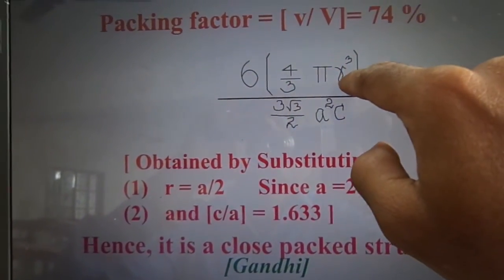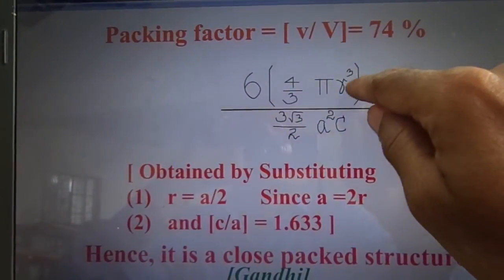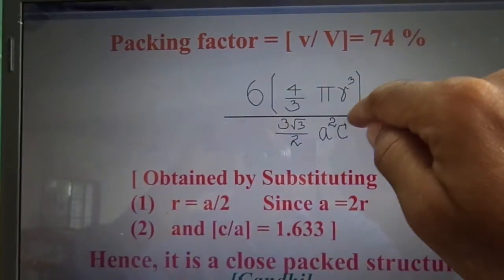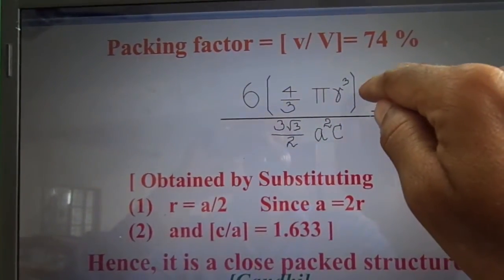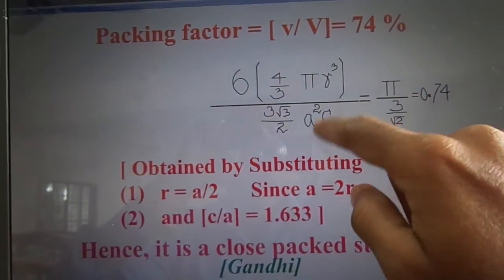Here the substitution that we can do is 2r is equal to a. So r is equal to a by 2. That substitute means that happens to be a³ by 8. A³ and a² gets cancelled. So one a will be remaining here. That may be treated as c by a in the denominator.